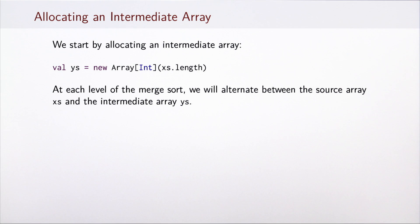We will start by allocating an intermediate array. We will call this array ys whereas the original array was xs. In order to use this auxiliary storage efficiently, we will alternate between using xs versus ys as the array where we do the work.